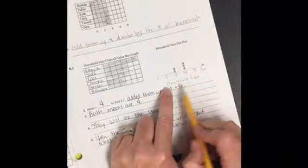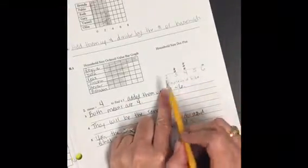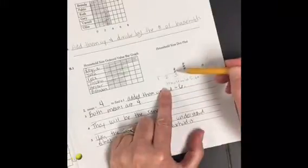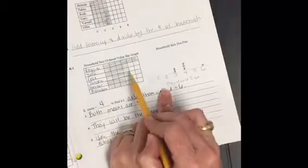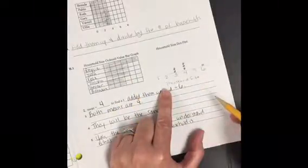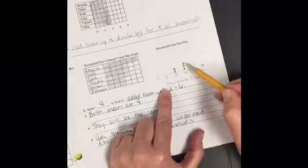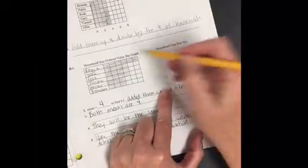Then to create your dot plot, you would have had to put your variable at the bottom, since we know that the variable is household size, and put your dots to represent. So if I saw over here, there were two people with three, so I should have two colored dots above three, three colored dots above four, and one colored dot for six.